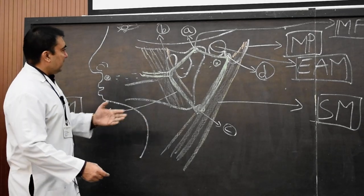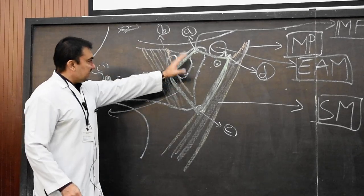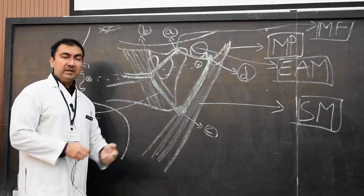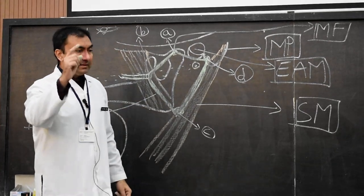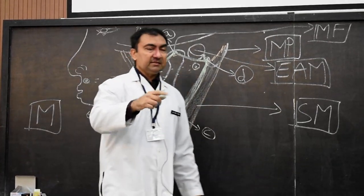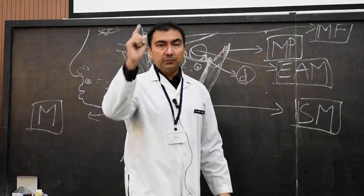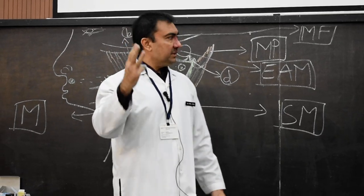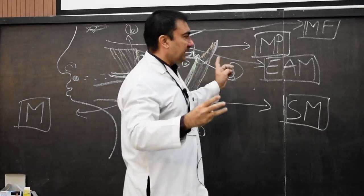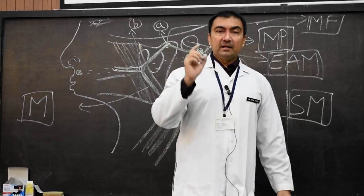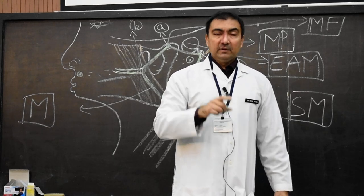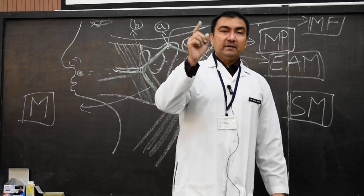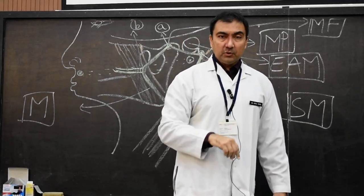We have completed the parotid duct. Now, in external features and relations, the parotid gland consists of three borders: the anterior border, the posterior border, and the medial border.